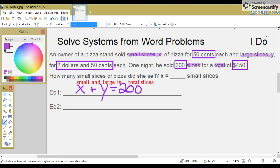Let's make our second equation for the total money. We know it's $450. Each small slice was 50 cents. So in front of the X's, we're going to put 0.5 for 50 cents. Plus, 2.5 for the Y's, because each Y was $2.50. That's equation 1 and equation 2.